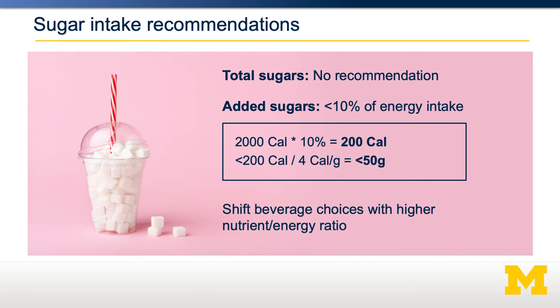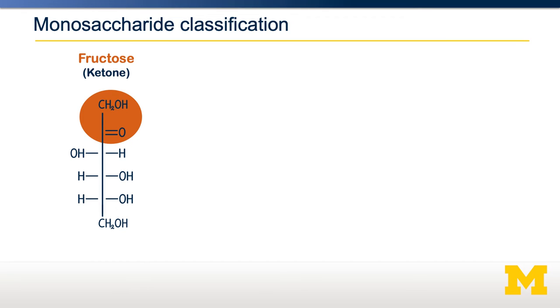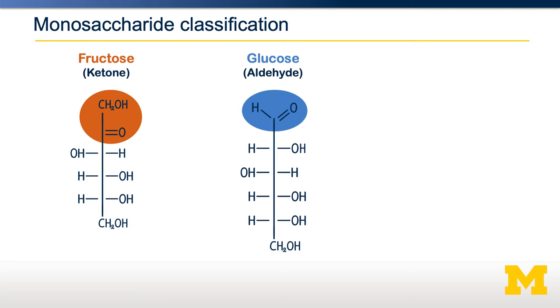There is also a general recommendation to switch beverage choices to those with a higher nutrient-to-energy ratio. Going back to monosaccharides, there are two important ways to classify them: the presence of the double bond oxygen group—either an aldehyde or a ketone—and the orientation of the hydroxyl groups. Fructose is a ketone, while glucose is an aldehyde sugar. For glucose, the double bond oxygen is next to a hydrogen group, whereas for a ketone, it's next to a carbon group.